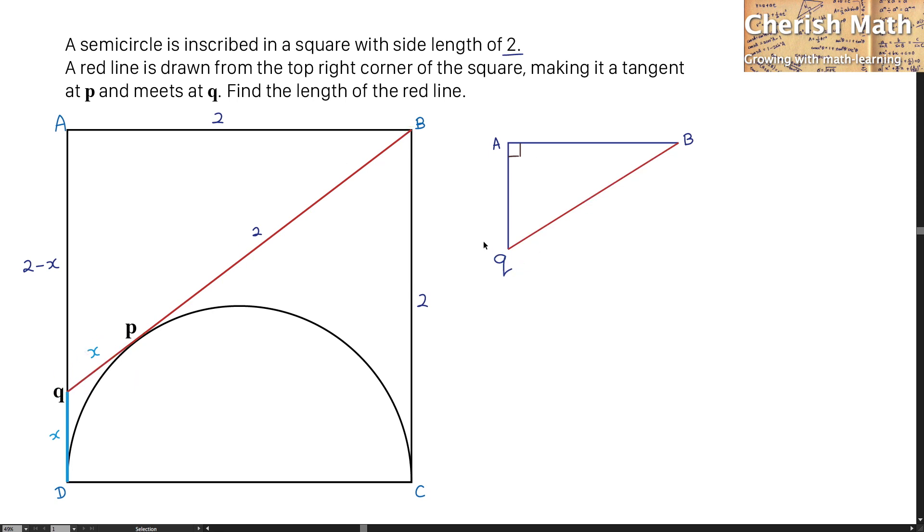The information here: AB stands for 2, AQ stands for 2 minus X, and the line BQ, I'm going to take X plus 2. I'm going to solve this part by using the Pythagorean theorem.